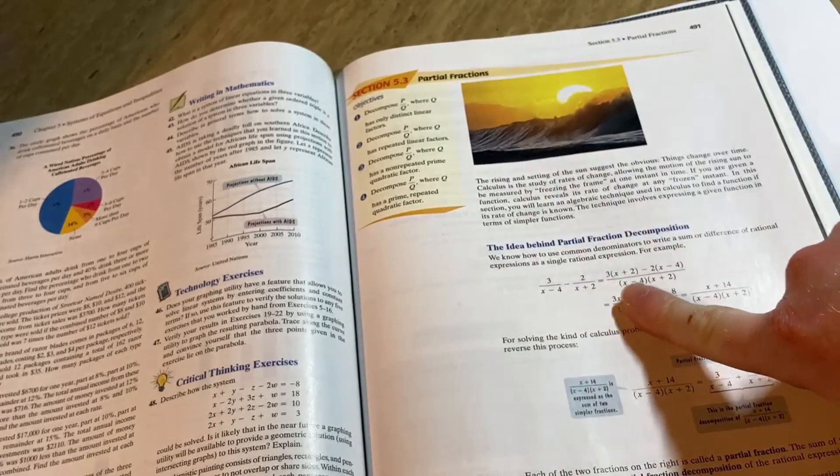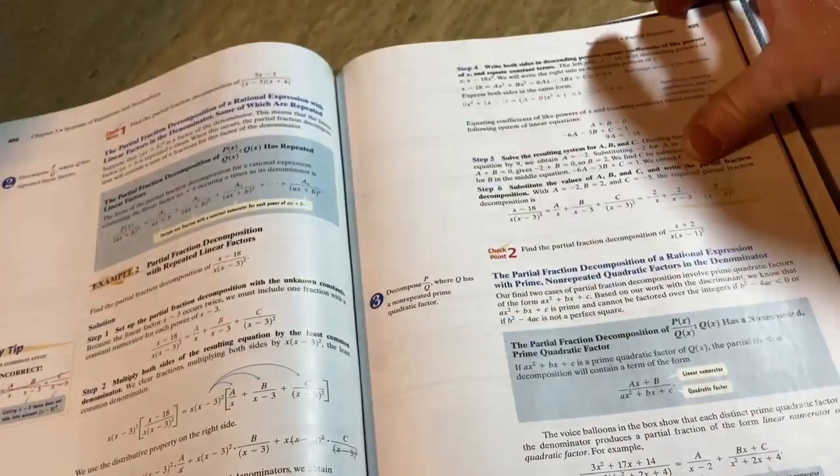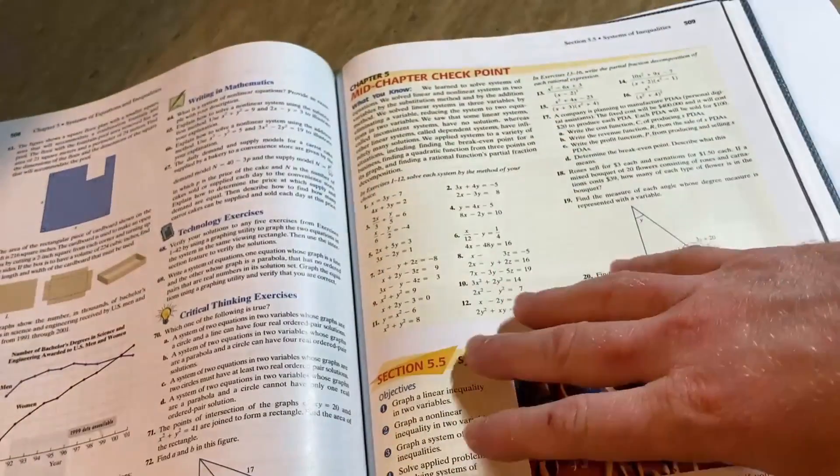Partial fractions is a way of breaking up complex rational expressions into simpler rational expressions so that you can perform operations on them, such as integration or finding the Laplace transform. Very, very powerful.